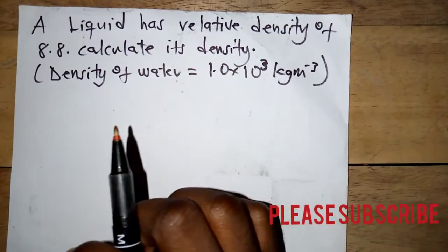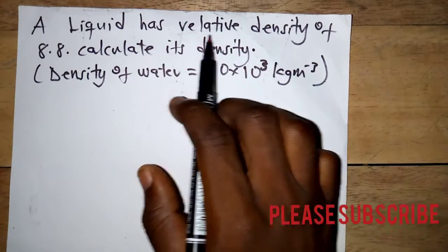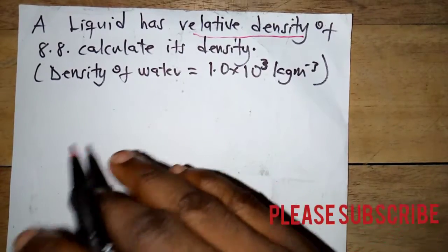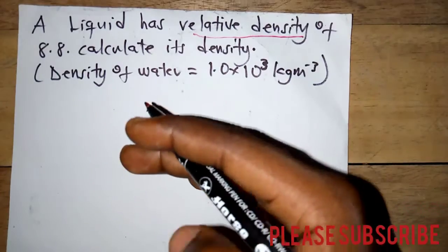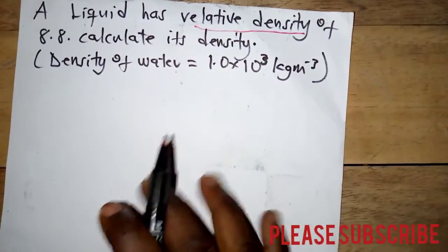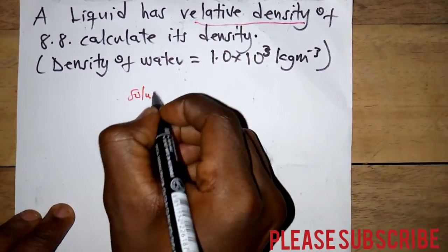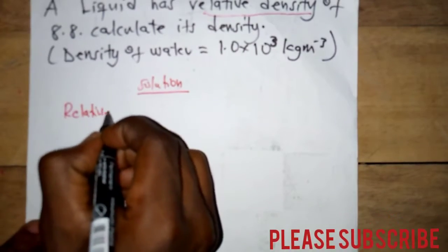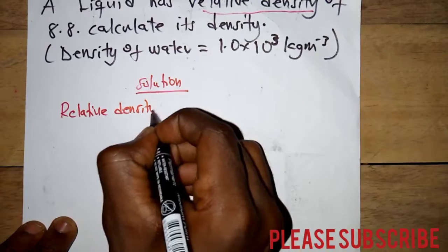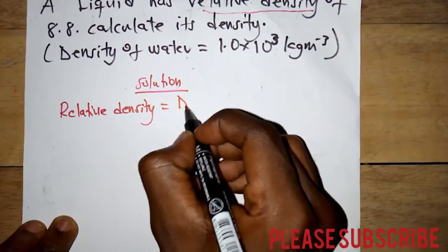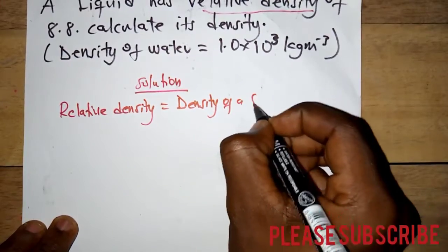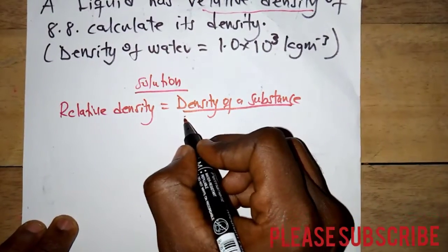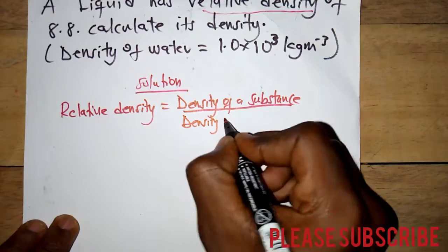Now we have to find the density. What is relative density? Relative density is defined as the ratio of the density of a substance to that of the density of water. So relative density equals the density of a substance divided by the density of water.